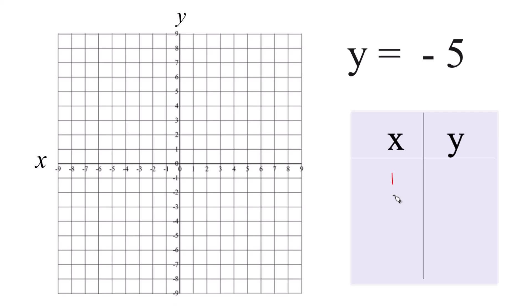So you could say x is 1, y is going to be negative 5. You could say x is 3, y is negative 5. Or you could say x is 5, and y is still negative 5 because we just have essentially 0x here.